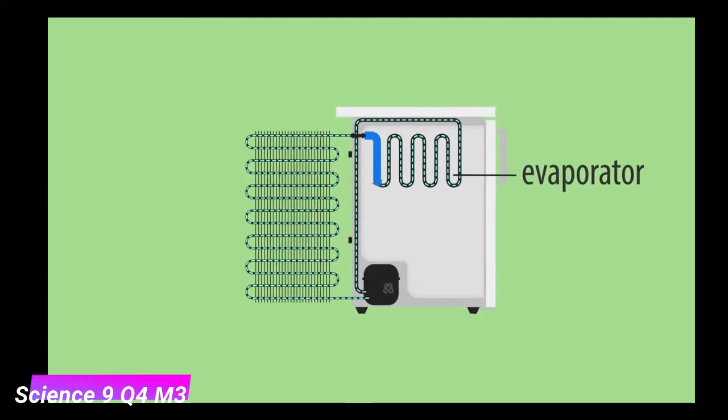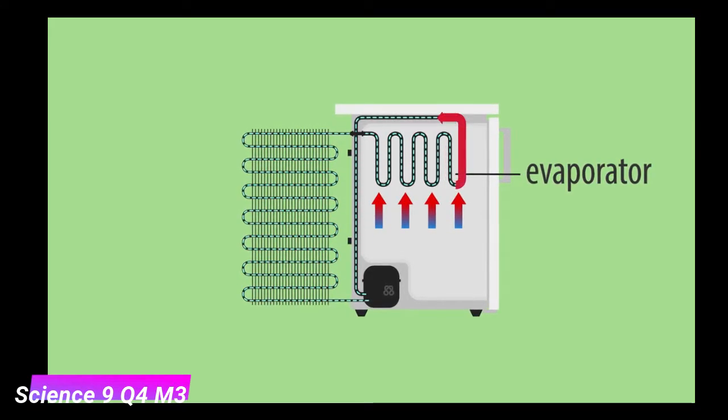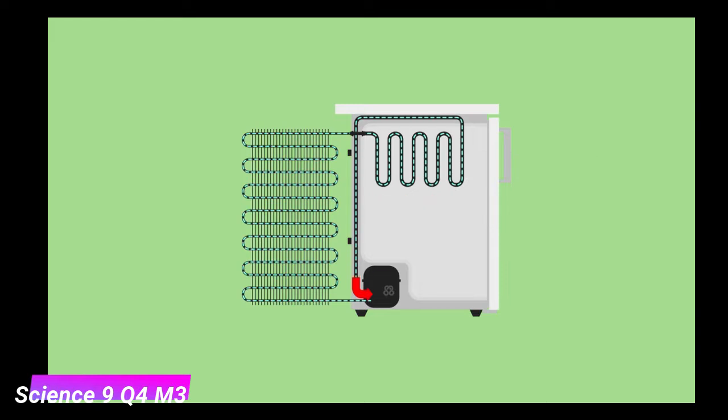Starting at the evaporator, the heat from the inside of the fridge evaporates the coolant running through the tubes. The heated gas then travels down to the compressor, which pressurizes the gas.